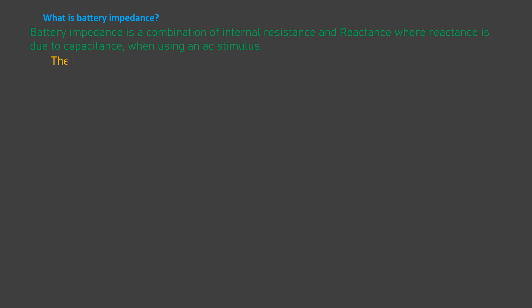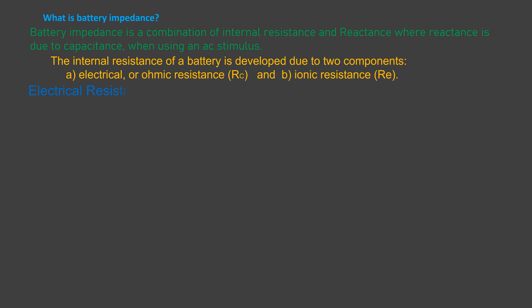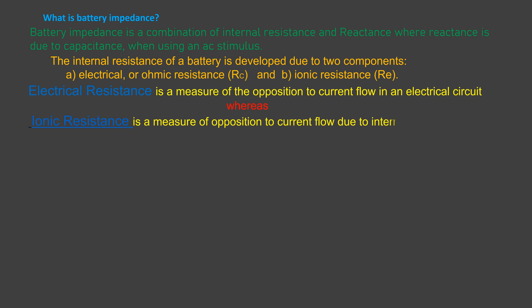The internal resistance of a battery is developed due to two components: a) electrical or ohmic resistance, and b) ionic resistance. Electrical resistance is a measure of opposition to current flow in an electrical circuit, whereas ionic resistance is a measure of opposition to current flow due to internal factors such as electrode surface area and electrical conductivity.